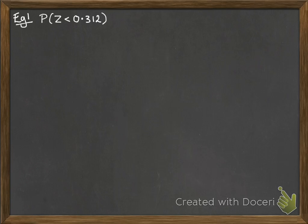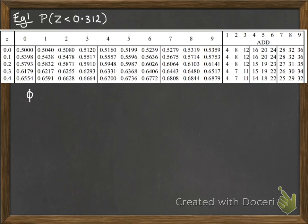Let's see how this really works then. So we've got the probability that z is less than this particular number of 0.312. So first of all, we need our table. We're going to find Φ(0.312). So let me show you how to do that.